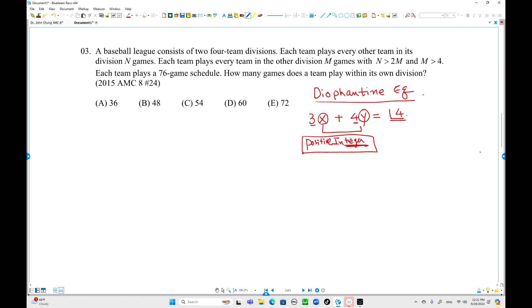We're going to set up the equation. A baseball league consists of two four-team divisions: Division A and Division B. We have two divisions, each division has four teams. Each team plays every other team in each division. So I'm going to pick these teams. These teams play with the other teams N games. Total in the same division, they played three N games.